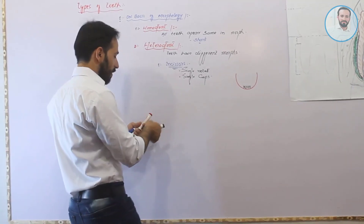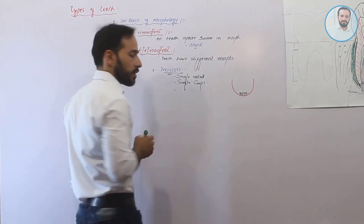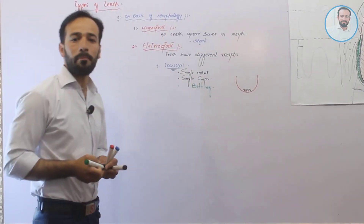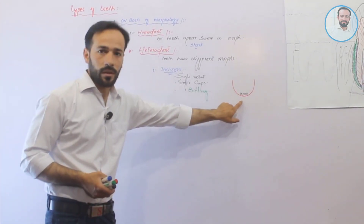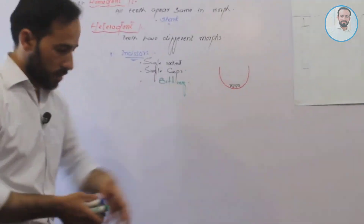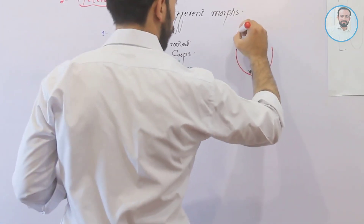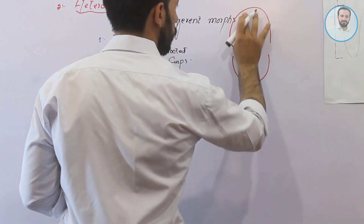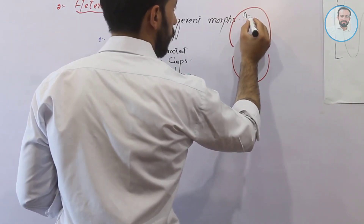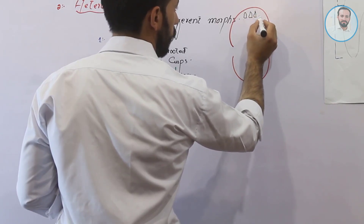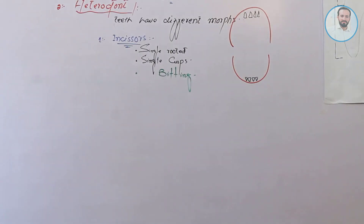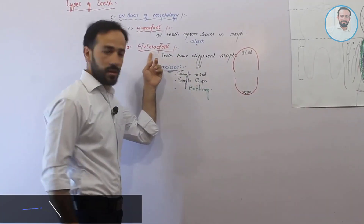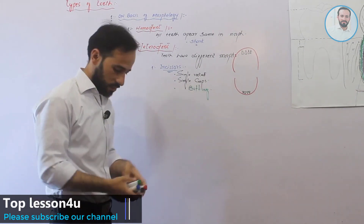Incisors are used for biting. Looking at the diagram, we have incisors in both the upper jaw and lower jaw at the front of the oral cavity. So in heterodont organisms, the first class of teeth is incisors.